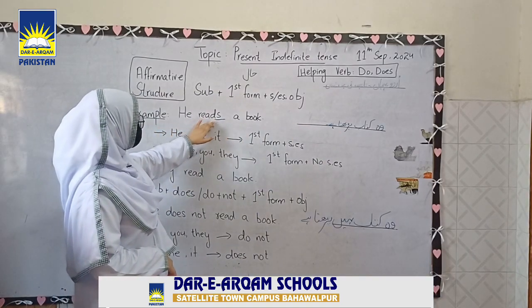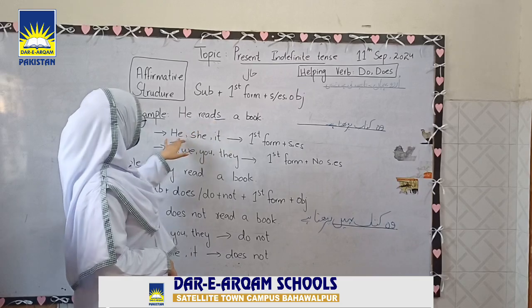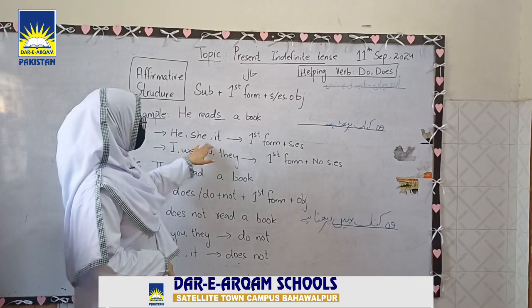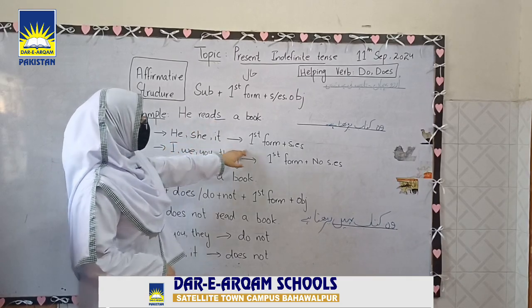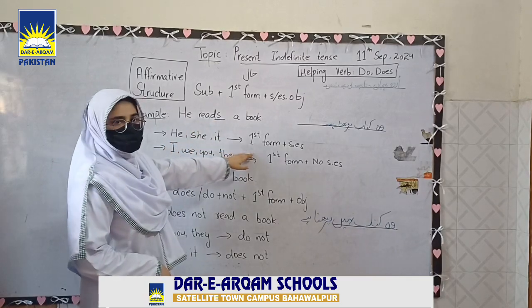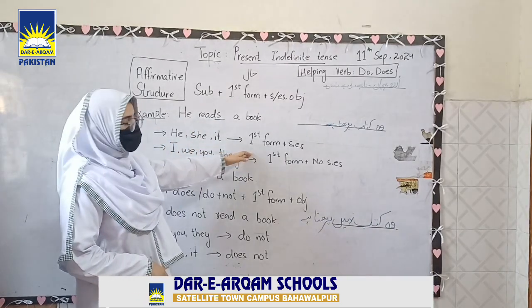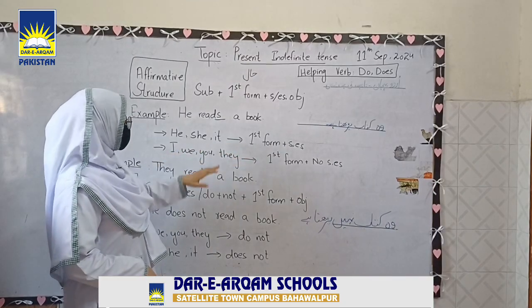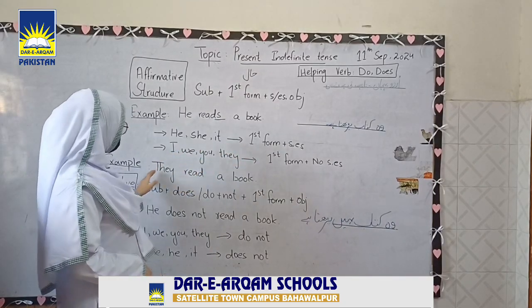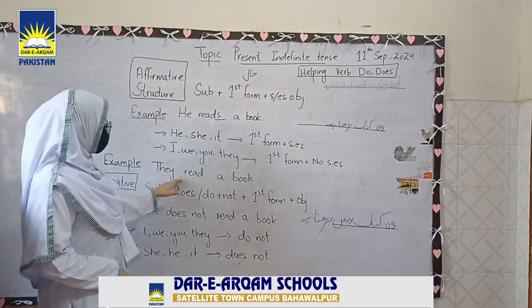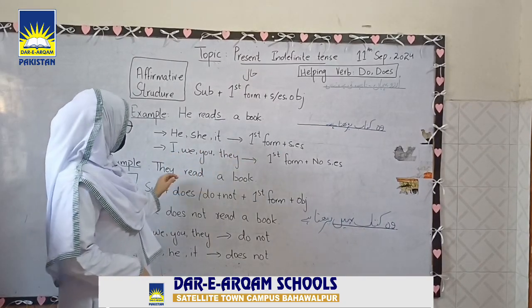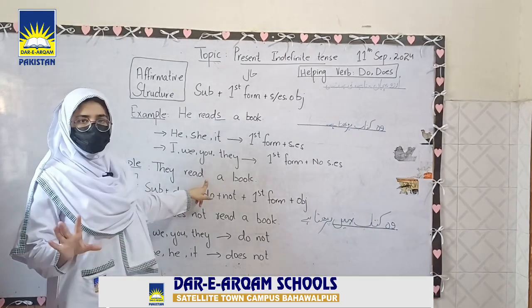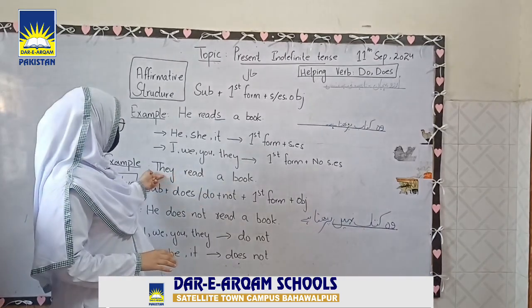We used 'reads' here because the subject is he, she, or it — so we add S or ES to the first form of the verb. For I, we, you, and they, we do not add S or ES. For example: they read a book.